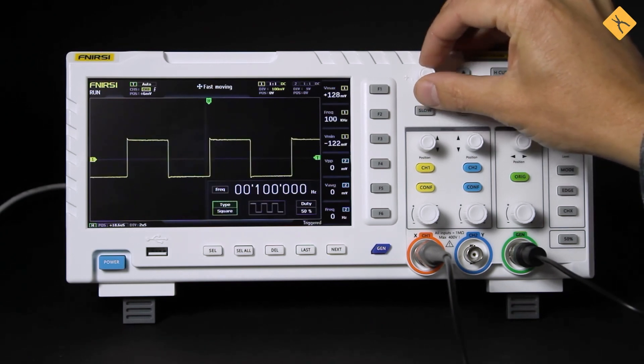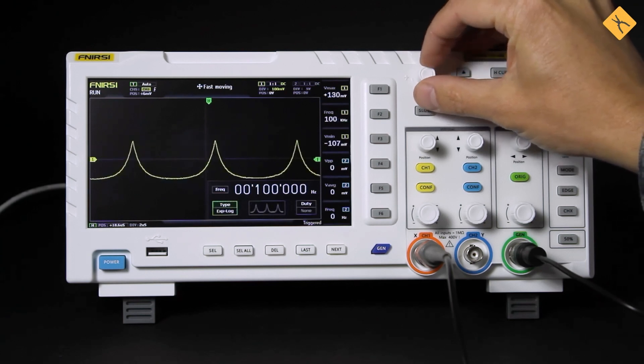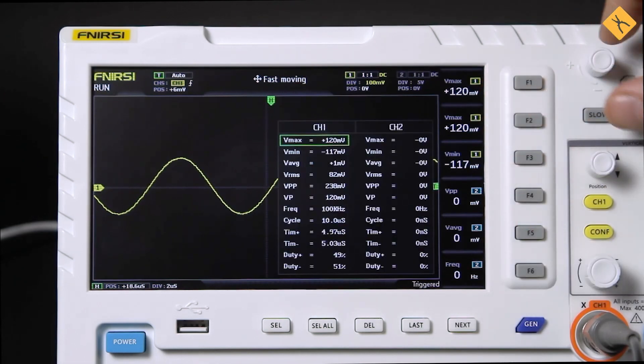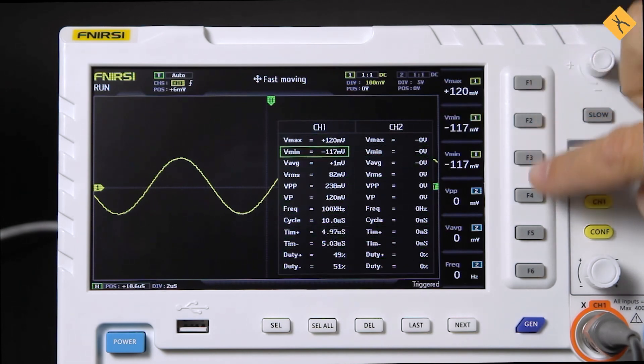Maximum frequency is 10 MHz for a sine wave and 2 MHz for other signals. Automatic measurements are displayed on the right side of the screen. Pressing this button unlocks access to displayed parameters. You can select up to 6 different parameters to display.